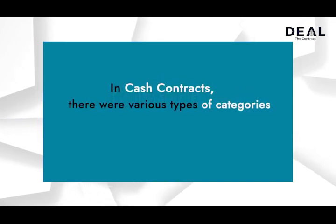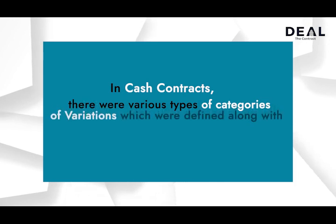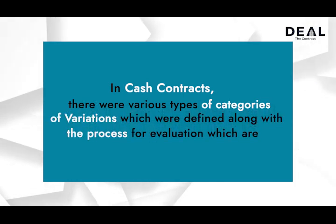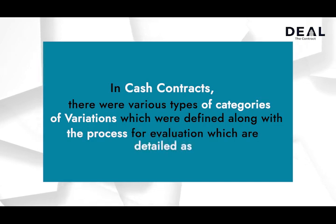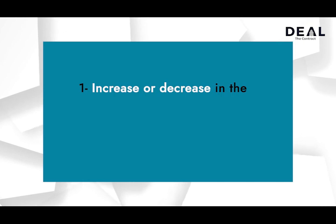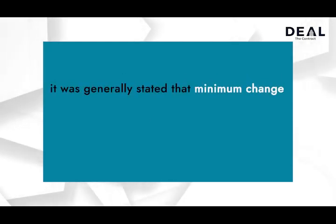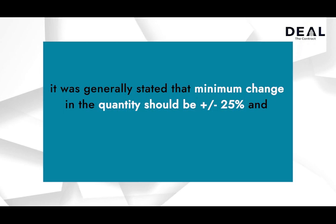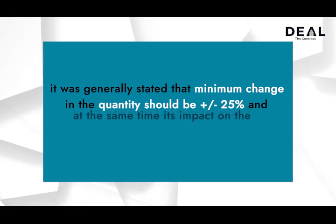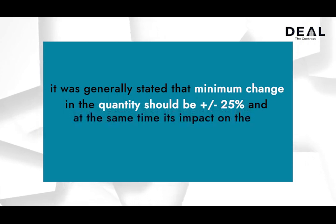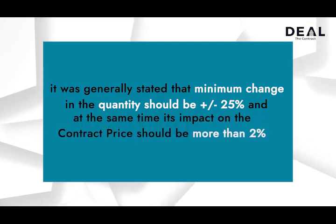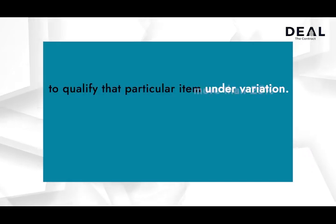In cash contracts there were various types of categories of variations which were defined along with the process for evaluation. 1. Increase or decrease in the BOQ quantity of one particular item. It was generally stated that the minimum change in quantity should be plus or minus 25 percent and at the same time its impact on the contract price should be more than 2 percent to qualify that particular item under variation.